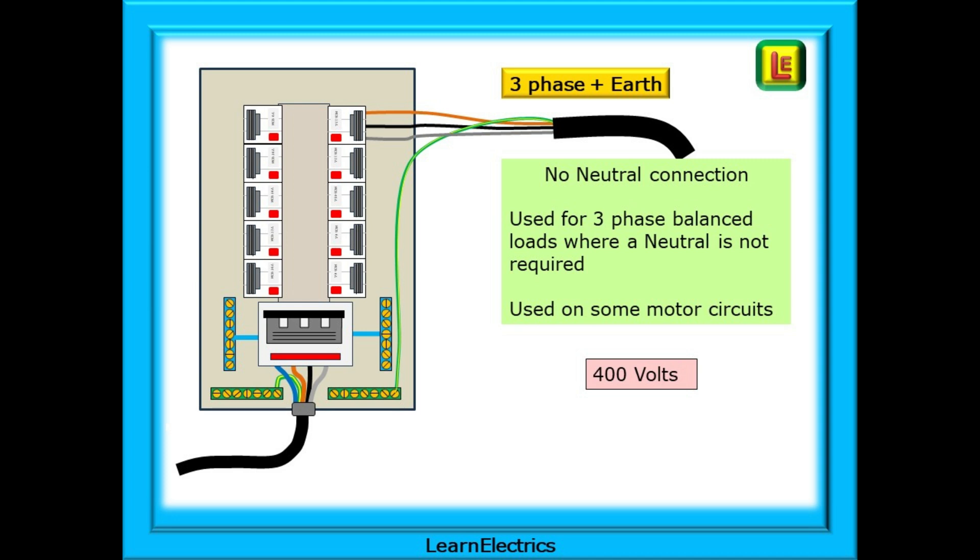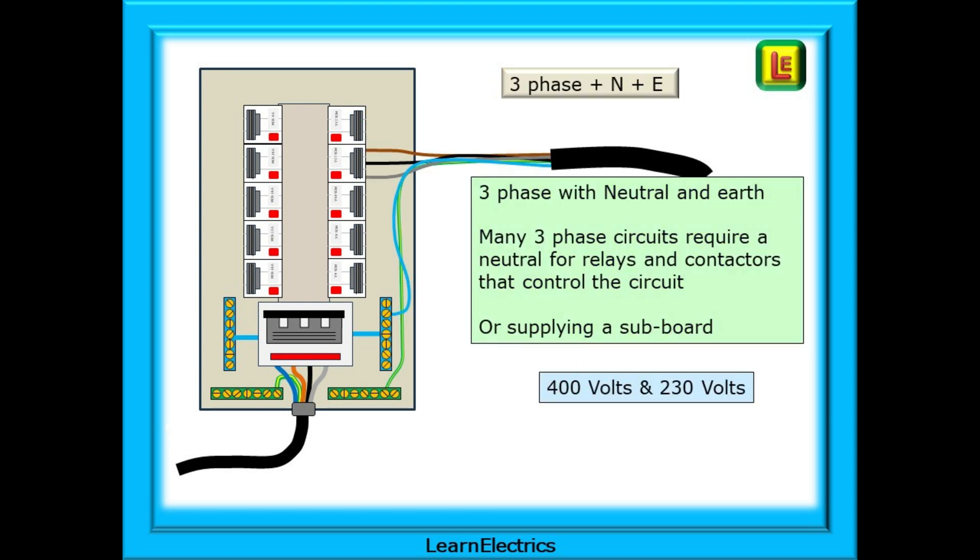Next is a three-phase plus neutral plus earth circuit, or five-wire circuit. This will give us a 400 volt supply and a 230 volt supply. Many three-phase circuits will require a neutral to create a 230 volt supply for relays and contactors that control the circuit, for instance. Or perhaps supplying a three-phase subboard in another part of the building. We will need to take all five wires to this subboard.